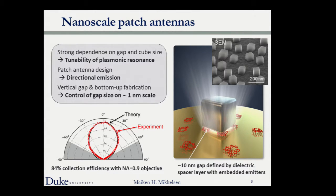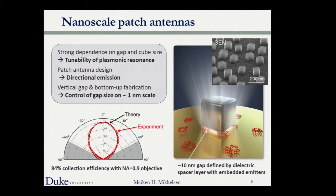The structure supports a cavity mode — gap plasmons in a Fabry-cavity propagating between the two interfaces, depending on the length of the cube. By changing the size of the cube, we can change the cavity resonance. We can also change the cavity resonance by changing the gap size, which also changes the local field enhancements. So we have multiple knobs to modify the plasmon resonance independently of the local field enhancements — a very well-controlled structure providing single nanometer control.